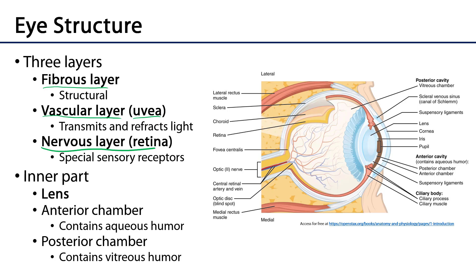These layers surround the inner part, which consists of a lens that separates two chambers: an anterior chamber that contains aqueous humor, and a posterior chamber which contains vitreous humor.